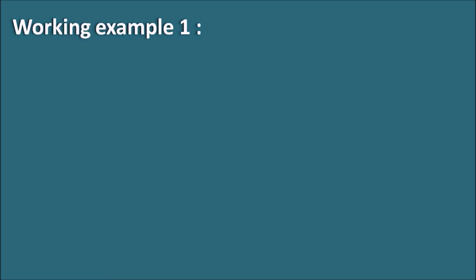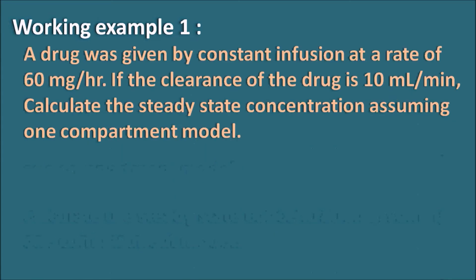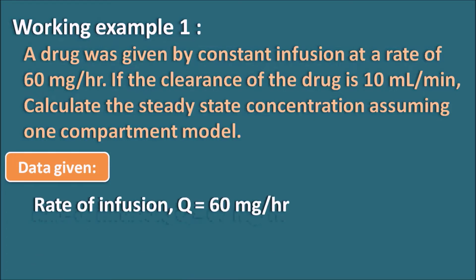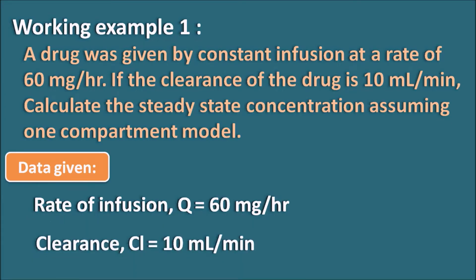Working example one: A drug was given by constant infusion at a rate of 60 mg per hour. If the clearance of the drug is 10 ml per minute, calculate the steady state concentration assuming a one compartment model. The data given: rate of infusion Q is 60 mg per hour and clearance CL is 10 ml per minute. We have to calculate the steady state concentration.